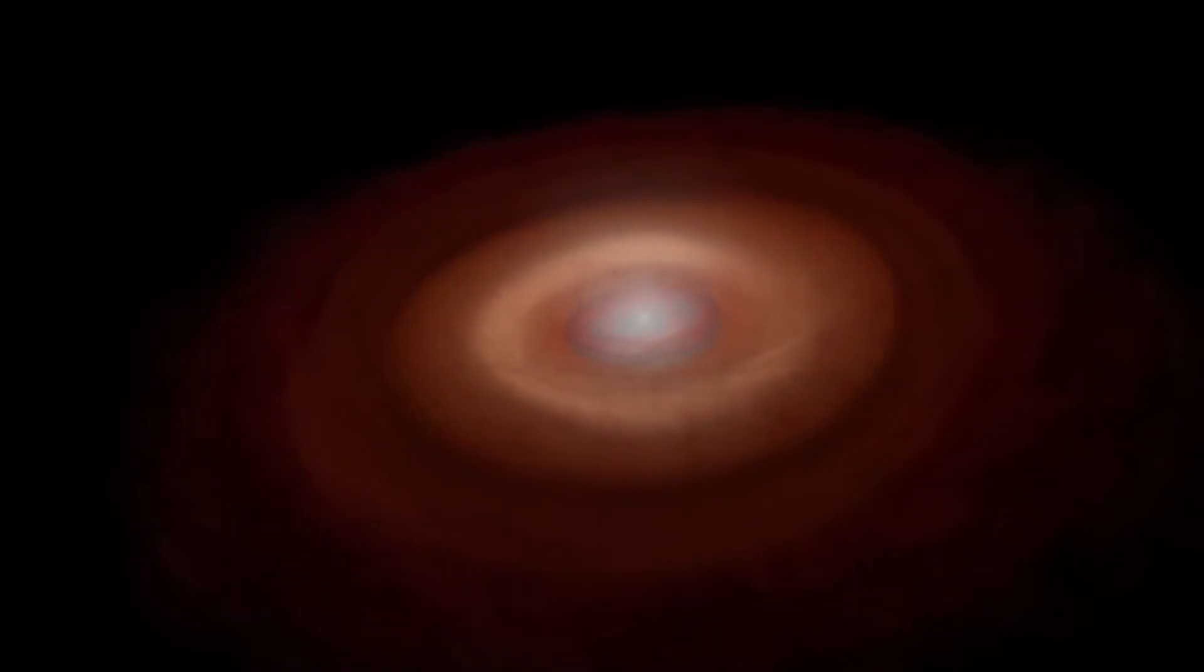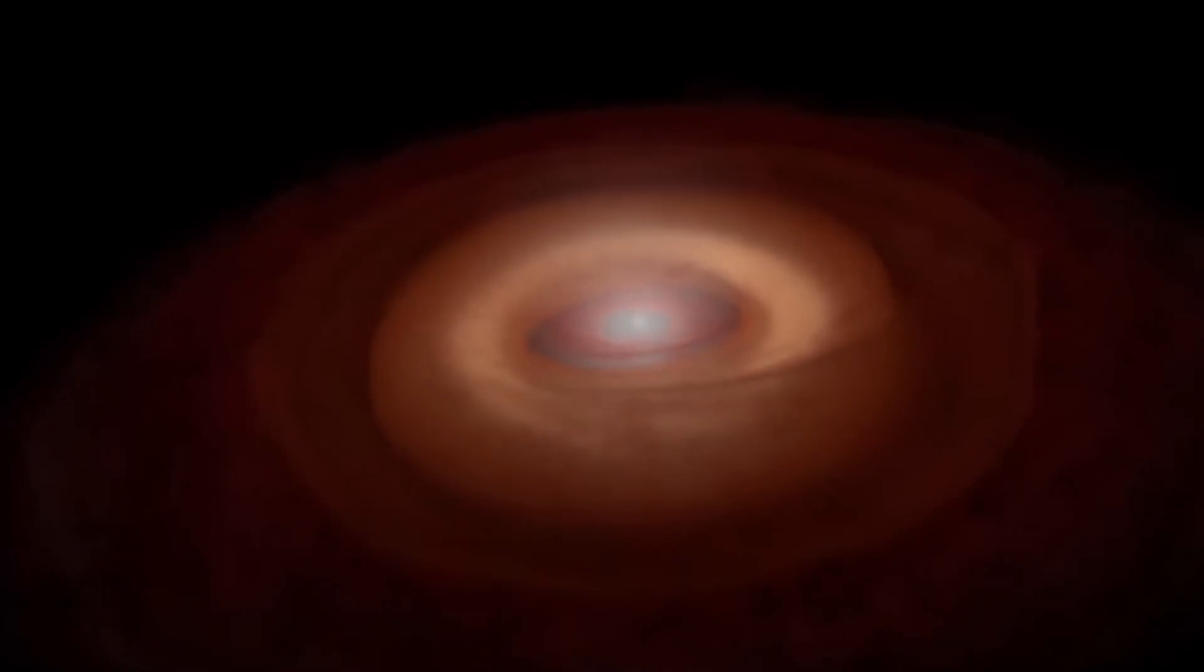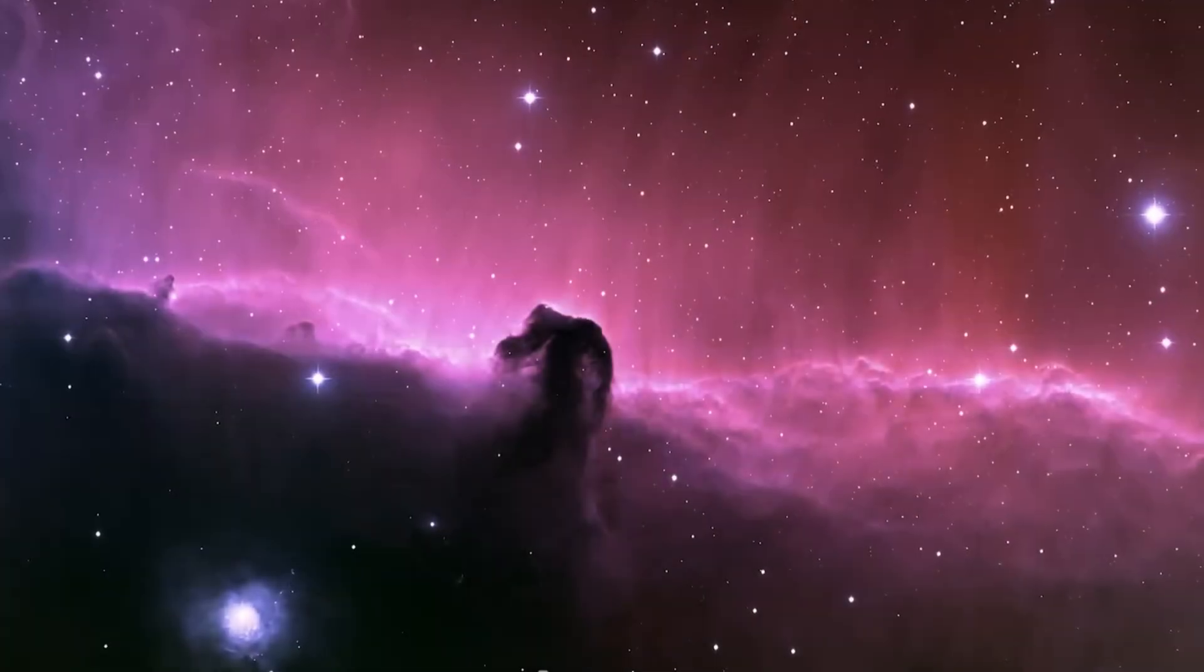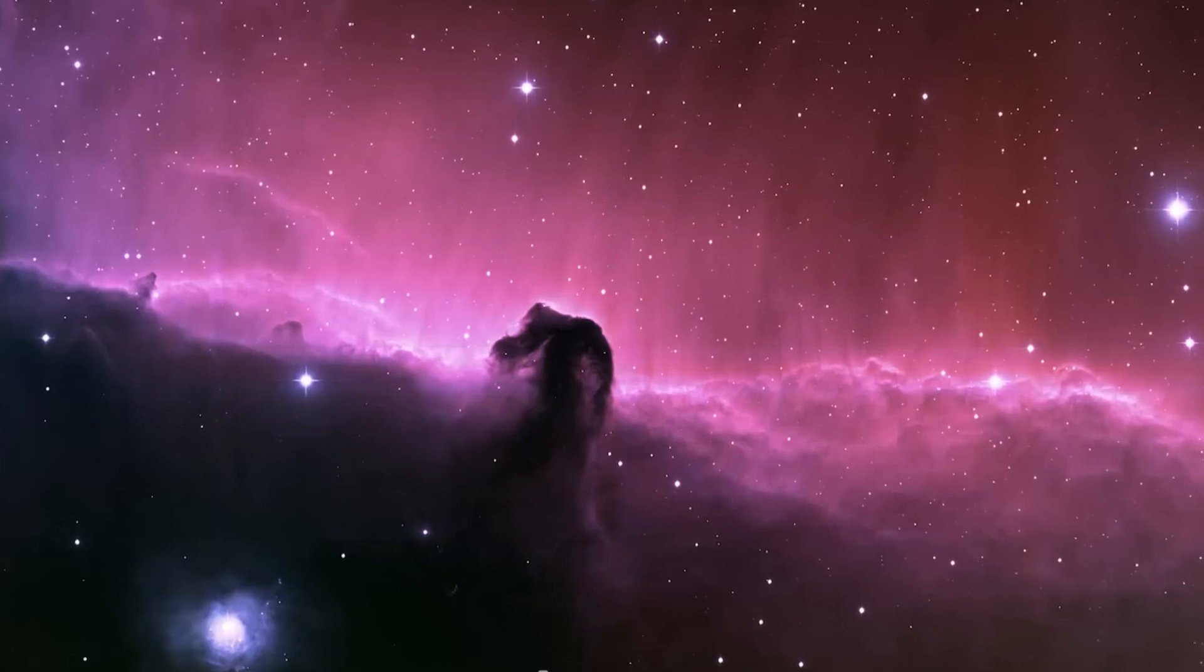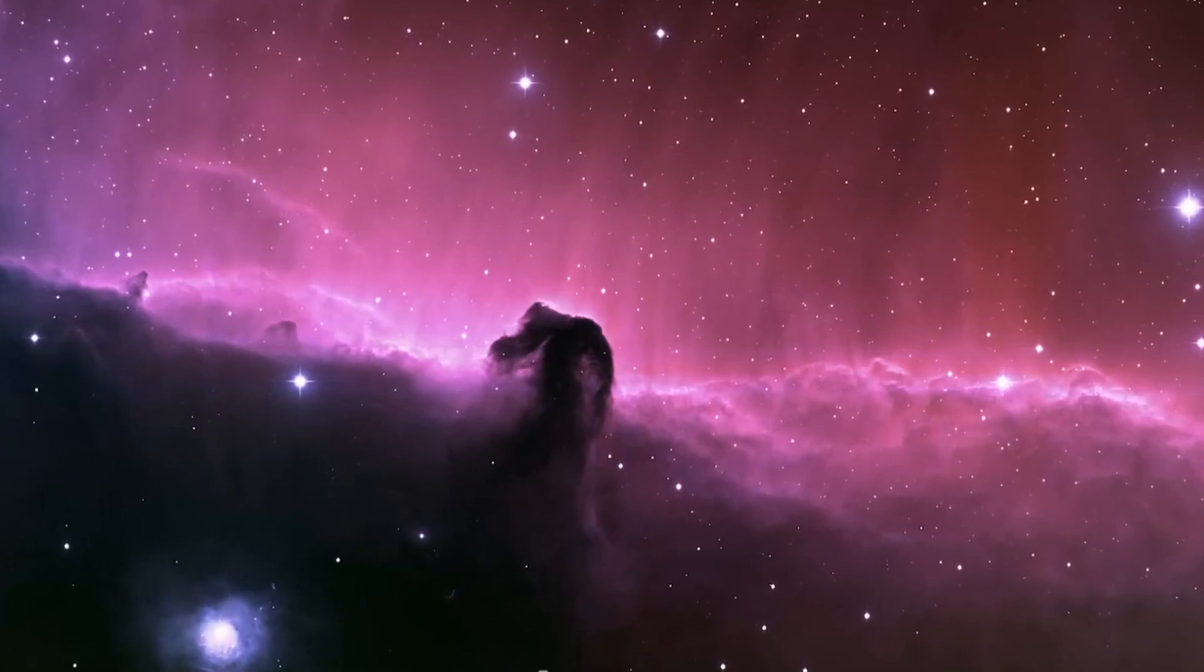Just like a baby drinking too hastily and spitting out some of the milk, the protostar cannot absorb everything at once. The excess material is hurled into space along the rotation axis. This is how the jets are created, shooting into space at speeds of up to 700,000 kilometers per hour.